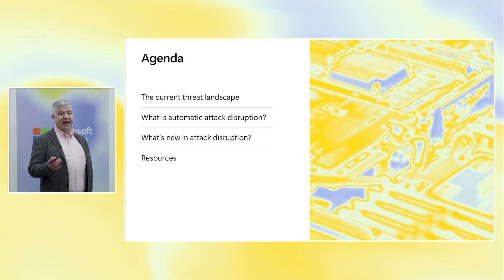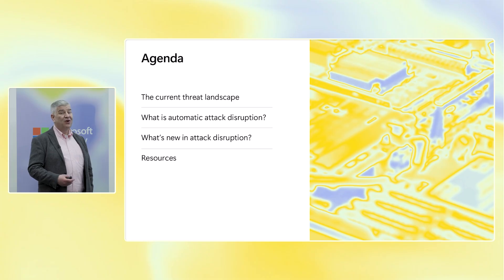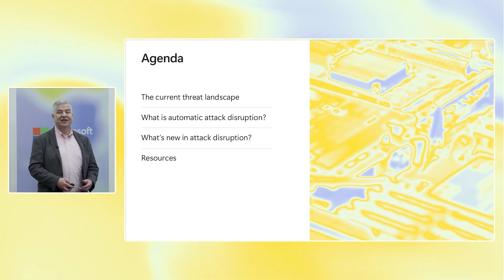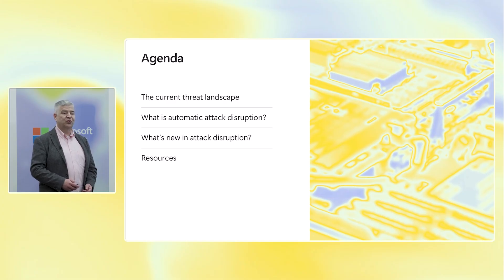Today we're going to go through a relatively quick agenda. We're going to talk about the current threat landscape, what's changed, what is automatic attack disruption, why did we build this thing, as well as what sort of new features have we added to automatic attack disruption since we did the initial release.